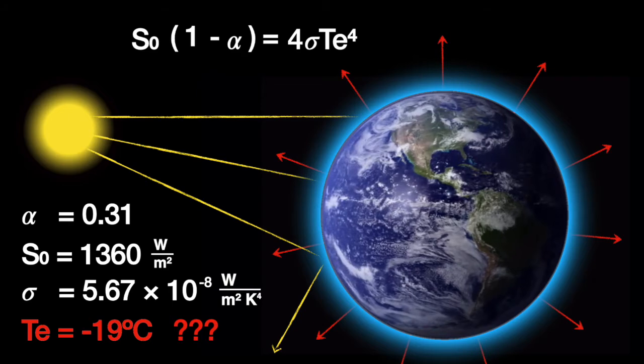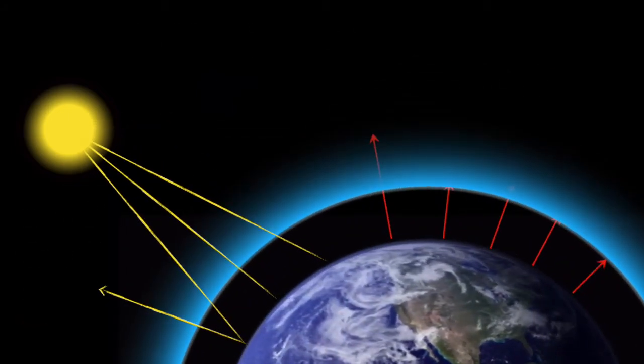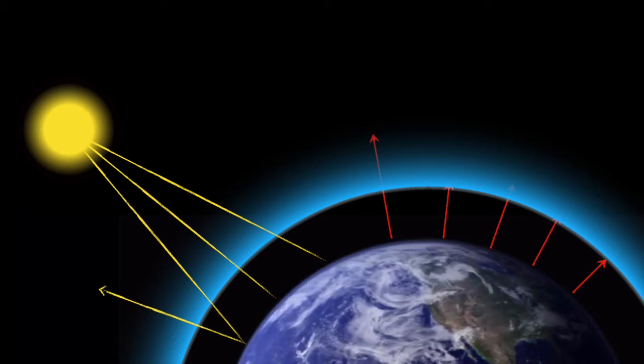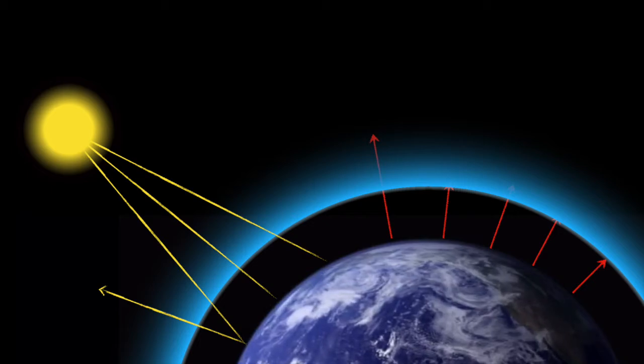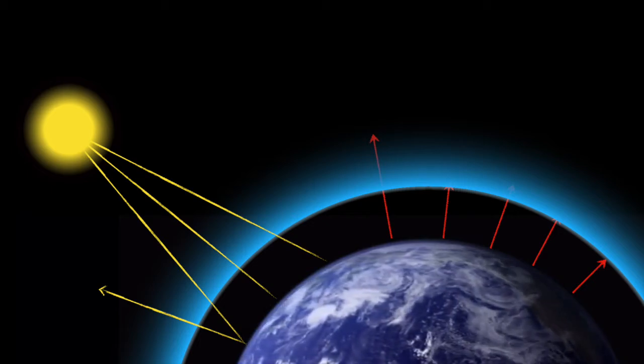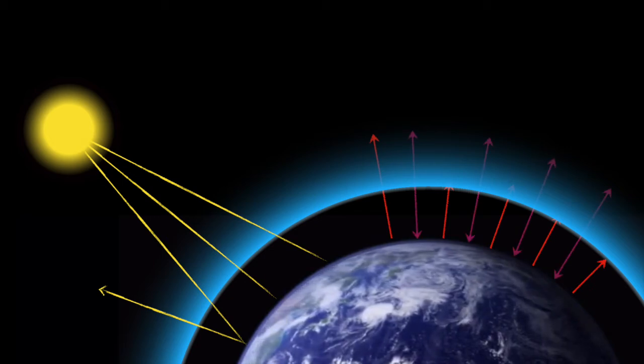Let's try that again, but this time let's think of the Earth's atmosphere as an optical filter separated from the surface. Sunlight goes right through it, but it absorbs much of the infrared radiation coming up from the surface. That keeps the atmosphere warm, which means it must also radiate energy away.